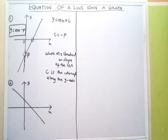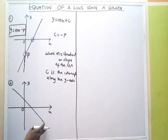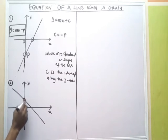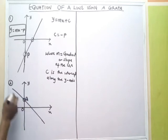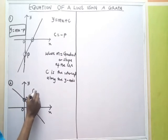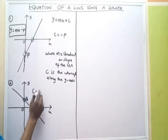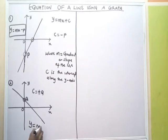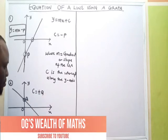Now, for the second question, the line is moving from the top left to the bottom right. So my slope has to be negative — my gradient should be negative. Let me call this point q. The point where this line crosses the y axis is on the positive side of y, so c is positive q. The equation for this line would be y equals negative mx plus q.